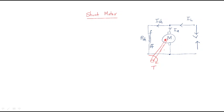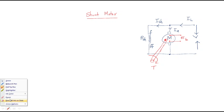Every motor has some generator characteristics. Because of this generator action inside the motor, it generates some EMF across the armature. That is called the back EMF. So we can write it as EB.